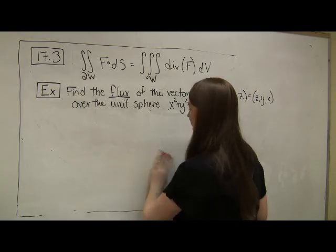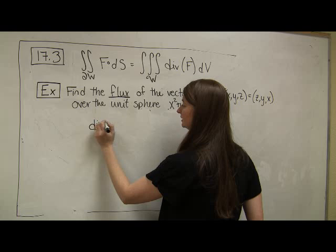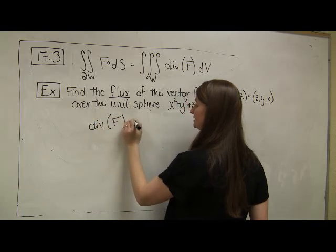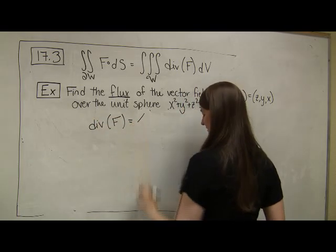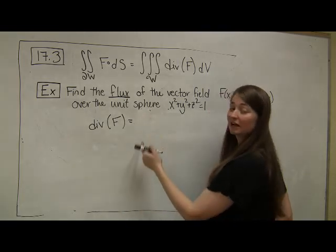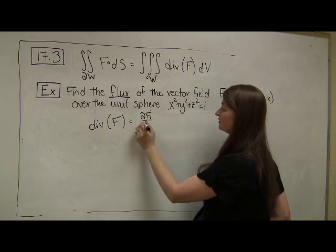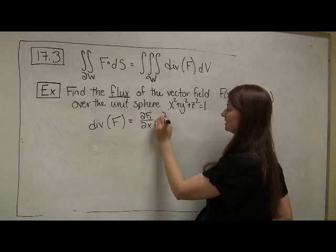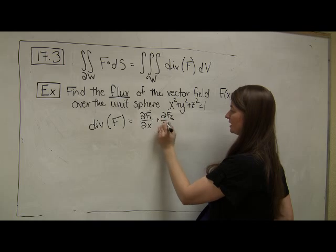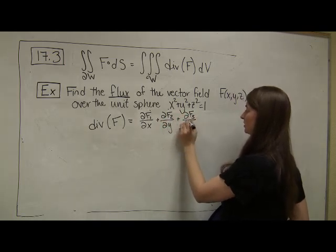So first for the divergence theorem, what do I need to compute? I need to compute, what is the divergence of f? And I need this example maybe overly simple to say, recall that the divergence of f is not a vector. Look, I almost wrote a vector symbol, not a vector. It's the partial derivative of the first component with respect to x, plus the partial derivative of the second component with respect to y, plus the partial derivative of the third component with respect to z.